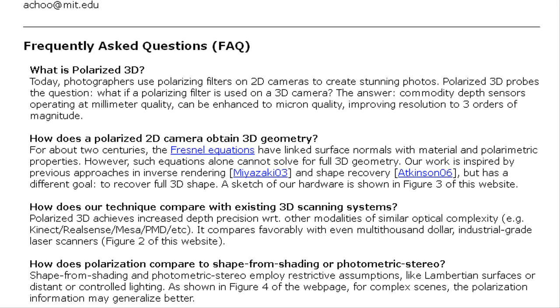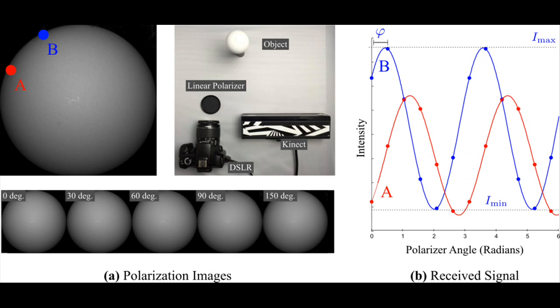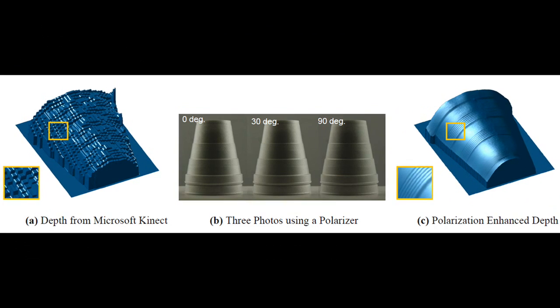The researchers called this new system polarized 3D. The experimental setup consisted of a Microsoft Kinect, which gauges depth using reflection time, with an ordinary polarizing photographic lens placed in front of its camera.